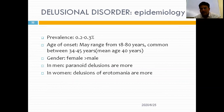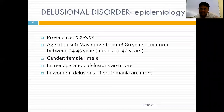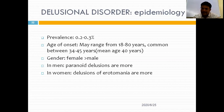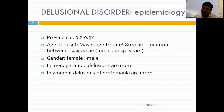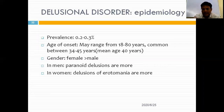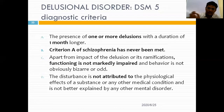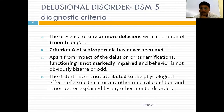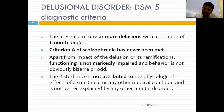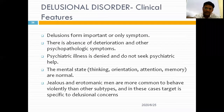Delusional disorder differs from schizophrenia in that only delusions are present and other criteria are not met. Prevalence is much lower at 0.2–0.3%. Female gender is more commonly involved. Average age of onset is around 40 years. In men, paranoid delusions are more common; in women, erotomania is more common. Diagnostic criteria: one or more delusions for at least one month; schizophrenia criteria not met; functioning is not markedly impaired; and not attributable to other disorders.